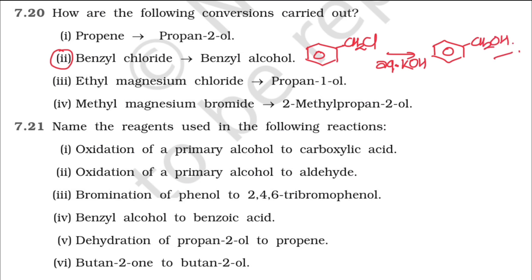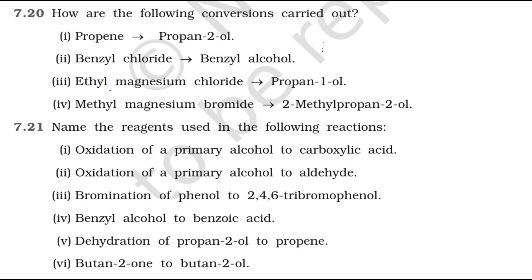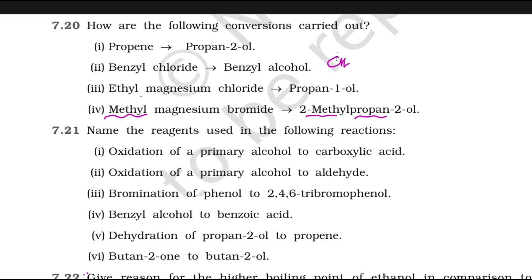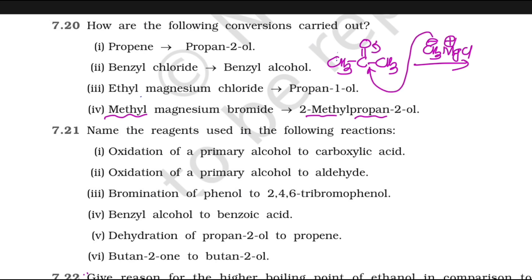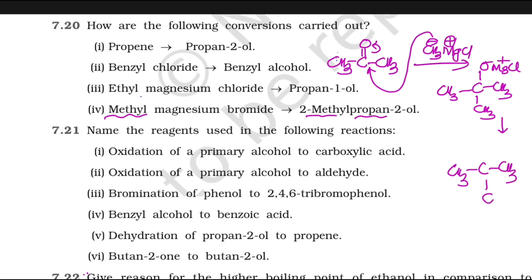Methyl magnesium bromide to 2-methyl-2-propanol. Methyl means one carbon; we need three more carbons. Take acetone, CH3-C=O-CH3, and treat it with methyl magnesium chloride (Grignard reagent). The carbanion attacks the carbonyl carbon, adding a methyl group with OMgCl. On hydrolysis, you get CH3-C(CH3)(CH3)-OH — 2-methyl-2-propanol.